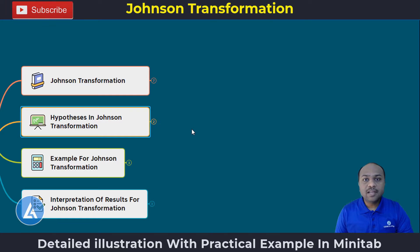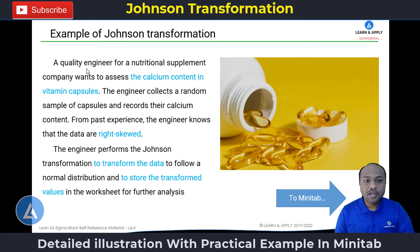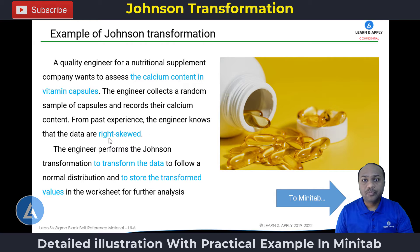After understanding the Johnson transformation and its hypotheses, let's look at a practical example. A quality engineer for a nutritional supplement company wants to assess the calcium content in vitamin capsules. The engineer collects a random sample of capsules and records their calcium content. From past experience, the engineer knows that the data are right-skewed. The engineer performs a Johnson transformation to transform the data to follow a normal distribution.